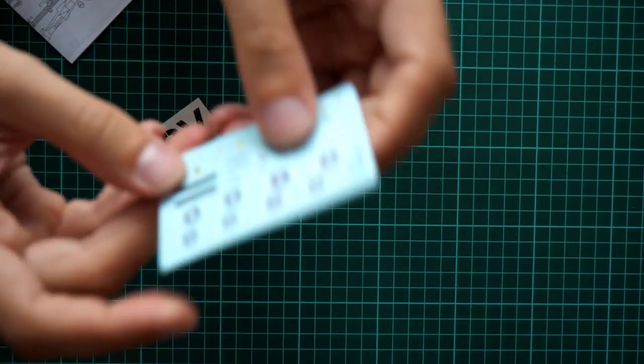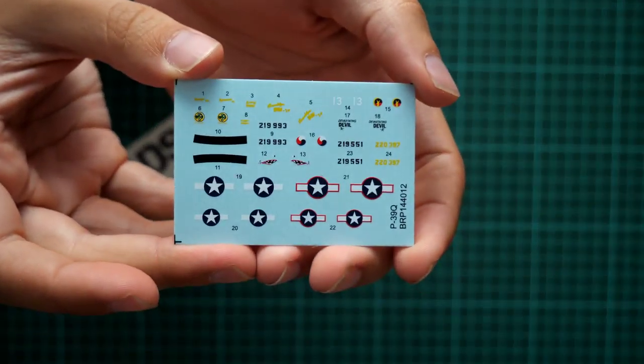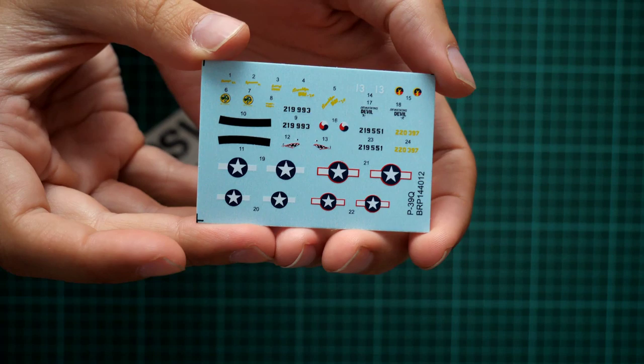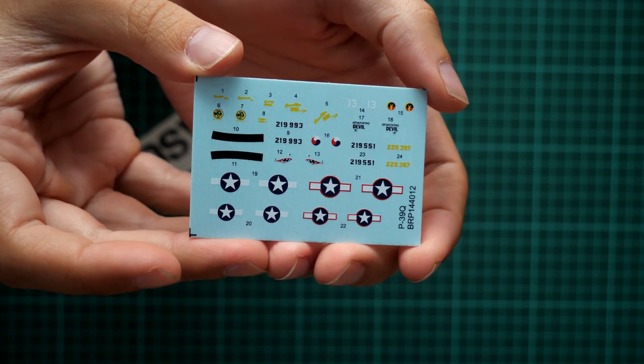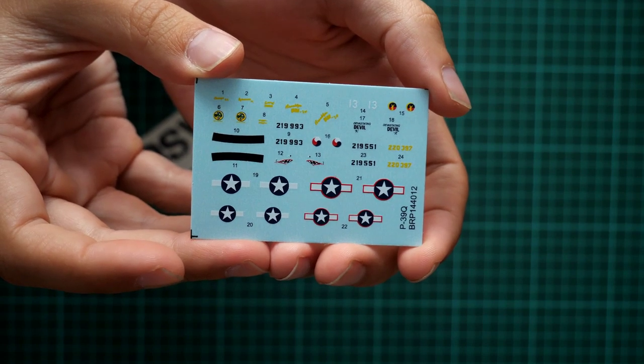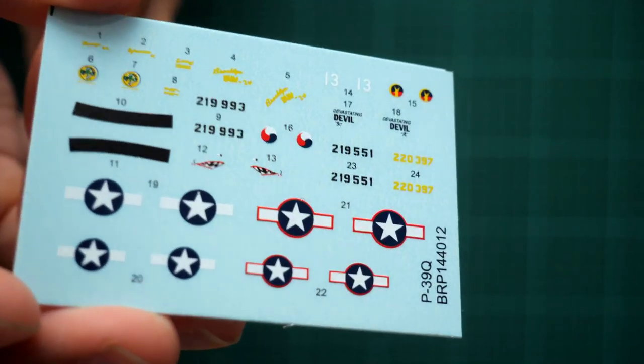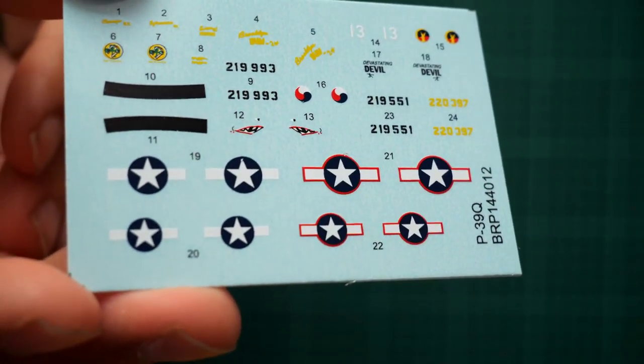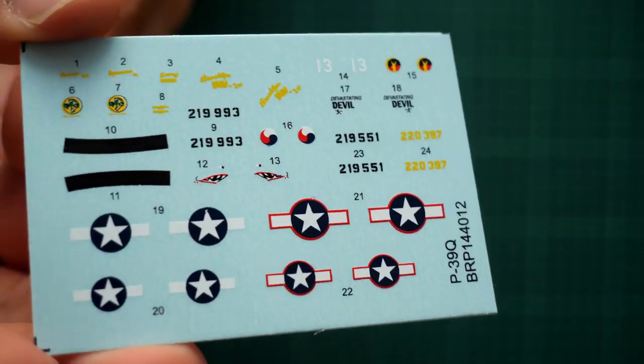Next we have also decals sheet. There is no mentioning where it was printed, but printing quality looks really good. I don't have any complaints here. We have here all necessary symbols for three marking options, as you remember. And I can bring them even closer so that you can see that printing quality is quite nice.